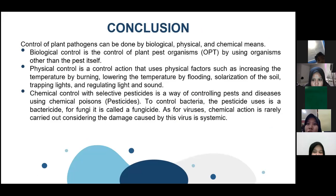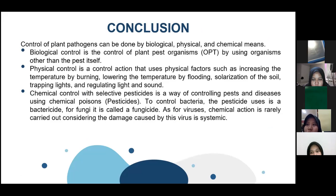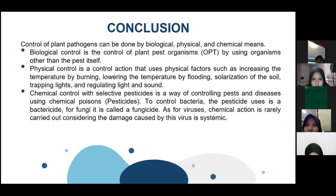In conclusion, control of plant pathogens can be done by biological, physical, and chemical means. Biological control is the control of plant pests, organisms, or OPT by using organisms other than the pest itself. Physical control is a control action that uses physical factors such as increasing the temperature by burning, lowering the temperature by flooding, solarization of the soil, dripping lights, and regulating light and sound.